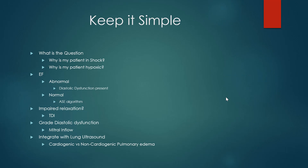Let's try to keep it simple. This is my approach to diastolic dysfunction. First, I ask myself: what is the question? Is this — why is my patient in shock? Or why is my patient hypoxic? Both of these things can be assessed using diastolic dysfunction as a pathologic finding that may be contributing. So I have my question, and then I'm looking to see: is my EF normal or abnormal?